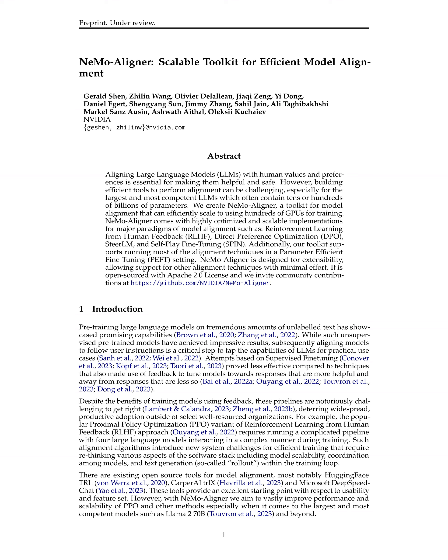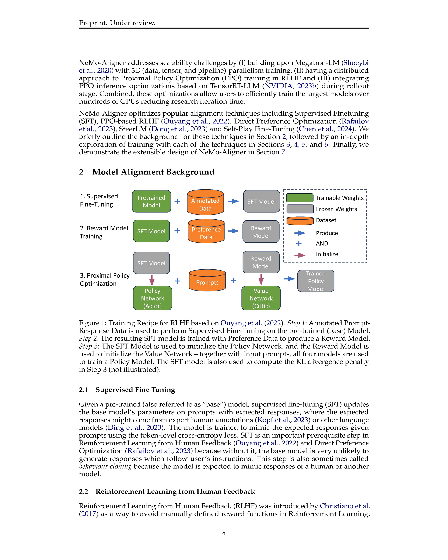How does the NEMO Aligner method work? NEMO Aligner works by addressing scalability challenges in training large language models for practical use cases. The method involves building upon Megatron-LM with 3D parallelism training and a distributed approach to Proximal Policy Optimization (PPO) training in RLHF. It optimizes popular alignment techniques such as supervised fine-tuning (SFT), PPO-based RLHF, direct preference optimization, SR-LM, and self-play fine-tuning.